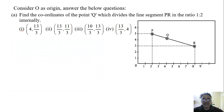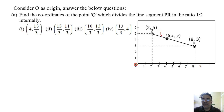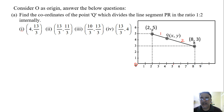Consider O as the origin and answer the questions below. First question: find the coordinates of point Q which divides the line segment PR in the ratio 1:2. The coordinate of P is (2, 5) and the coordinate of R is (8, 3). Let the coordinate of Q be (x, y). Point Q divides PR in the ratio 1:2 as already given, so we'll use the section formula.